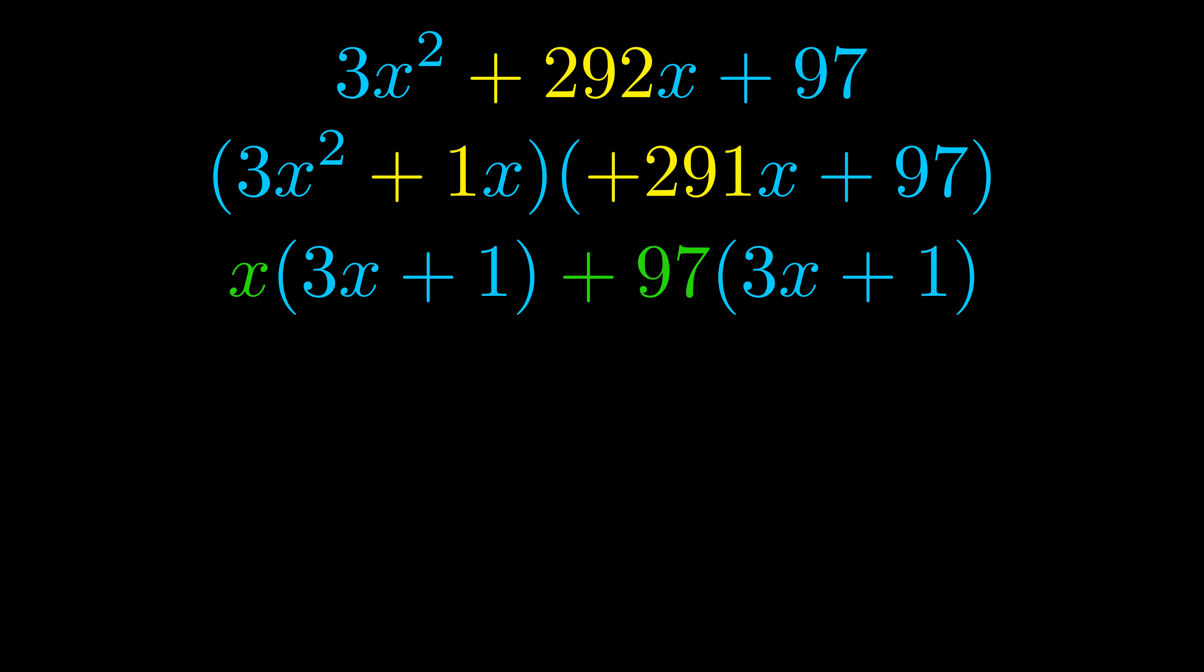Notice also how what remains inside of the parentheses is the same in both cases. The blue values are the same. Those blue values will become one of our factors and we will combine the two green values, the GCFs that we pulled out, to get the other one. And that is our fully factored equation.